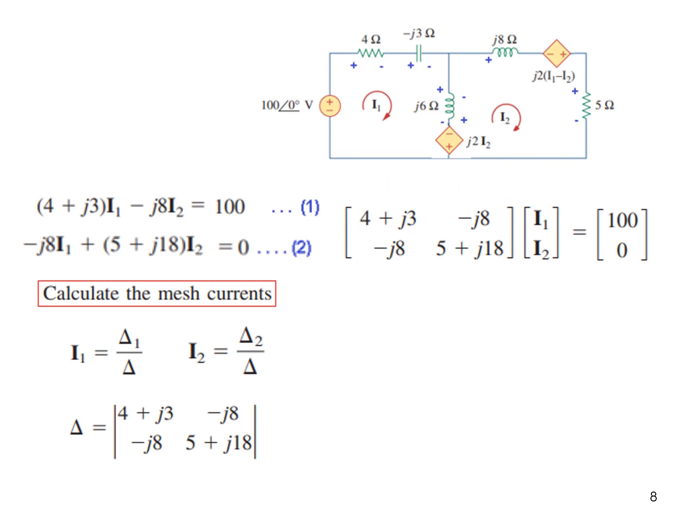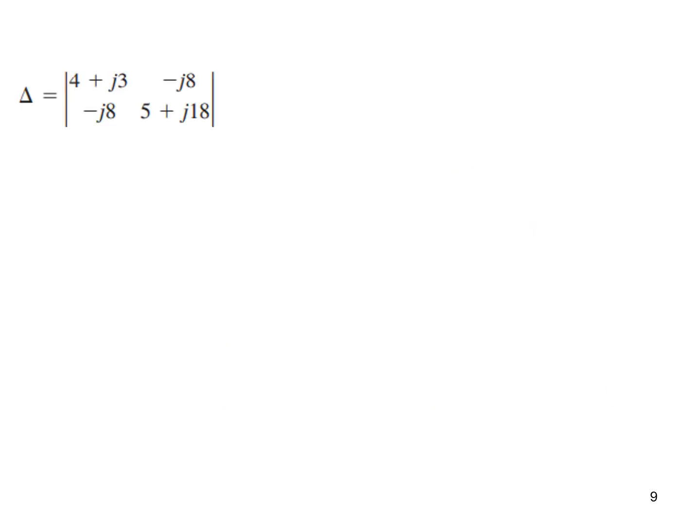And delta 1 if we replace the first column with the output voltage. So this is the output voltage replacing the first column. And similarly delta 2 is by replacing the second column. And now we can easily solve these with the help of a calculator in complex mode. So this value.